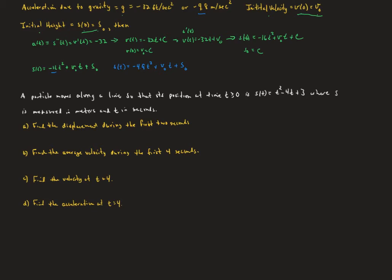So first question, let's find the displacement during the first two seconds. So remember, displacement is the change in position. So we are going to take s of 2 minus s of 0, and so plugging in 2, I think we would get 2 squared minus 4 times 2 plus 3, and then plugging in 0 would be just minus the 3. So that's 4 minus 8 is negative 4, negative 4 plus 3 is negative 1, negative minus 3 is negative 4.